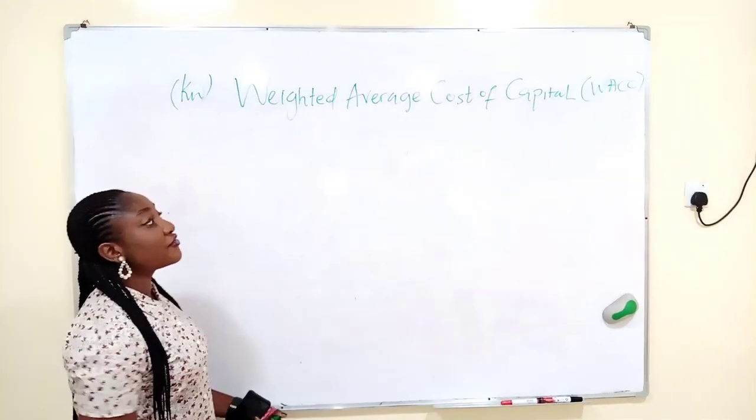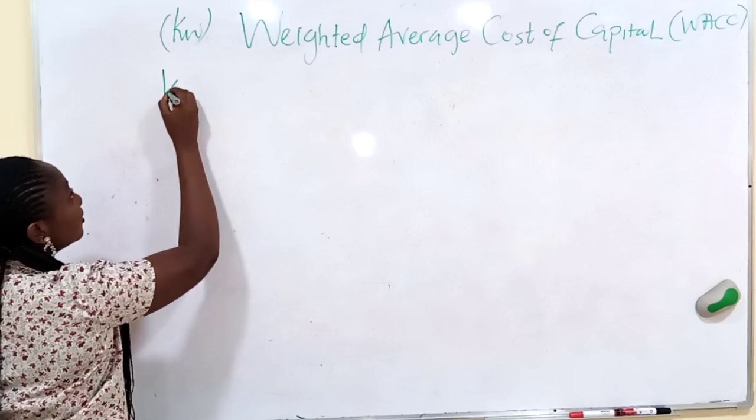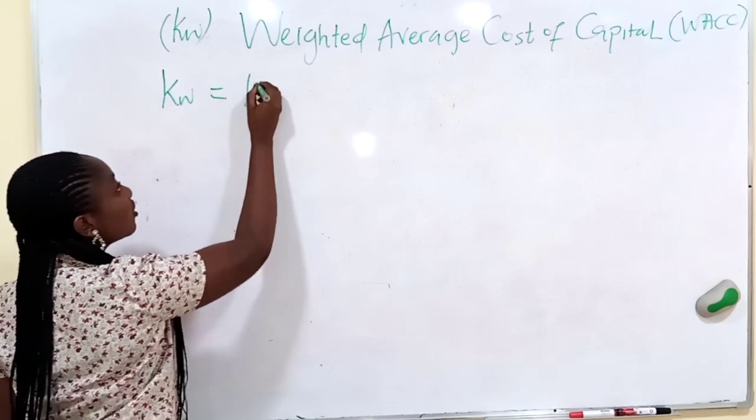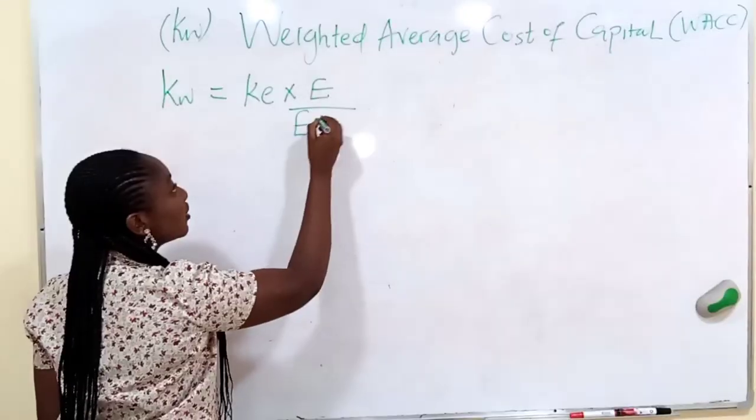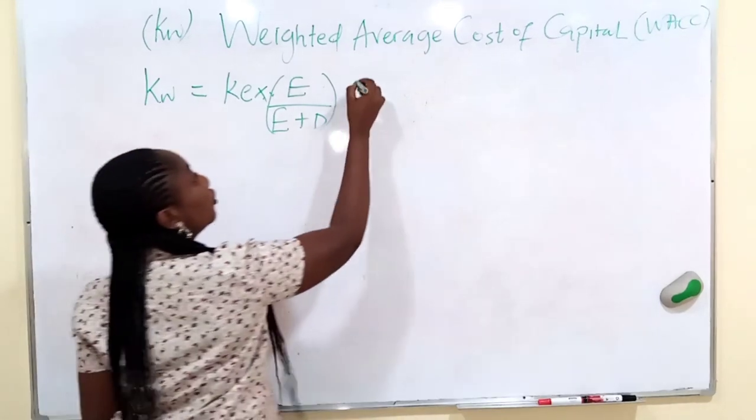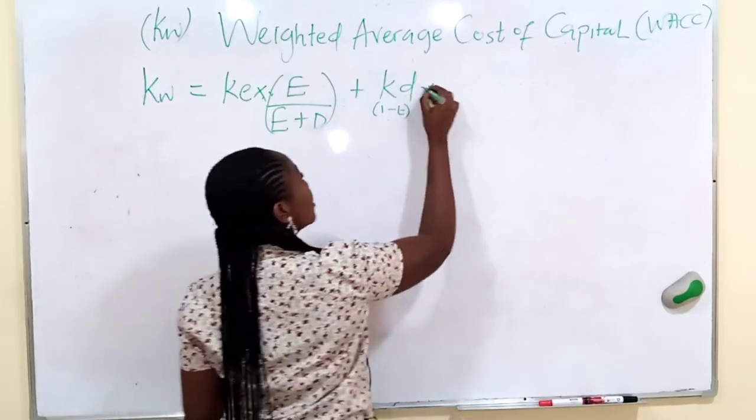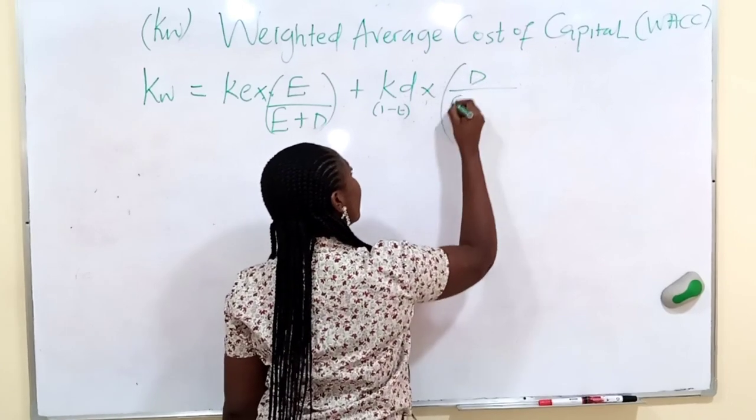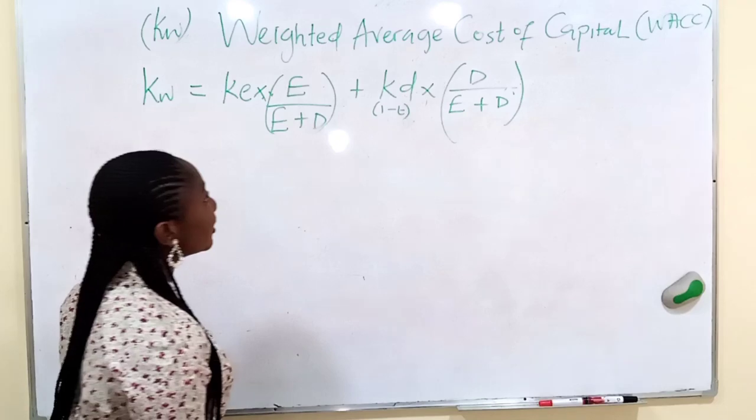In the introduction, we discussed a formula for calculating WACC. The formula is: WACC equals cost of equity multiplied by equity over equity plus debt, plus cost of debt after tax, multiplied by debt over equity plus debt.